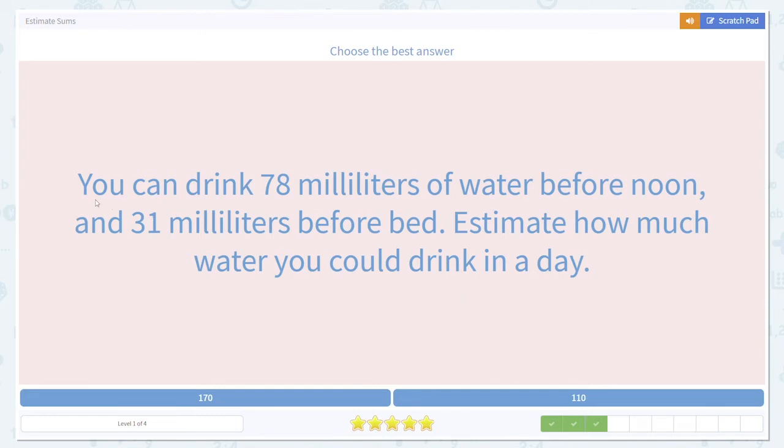Here we go again. You can drink 78 milliliters of water before noon and 31 milliliters before bed. Estimate how much water you could drink in a day. So we again need to combine these two numbers.